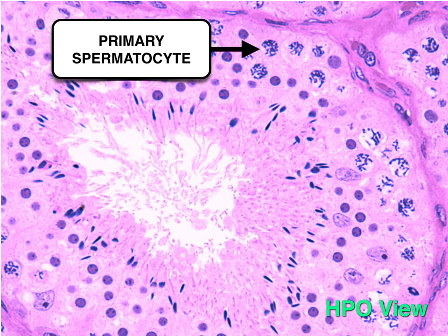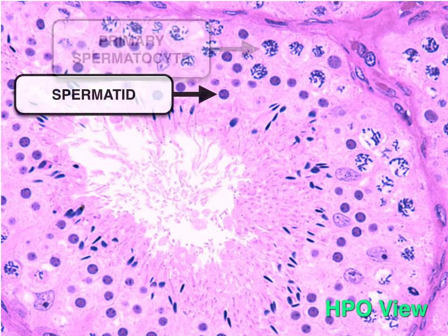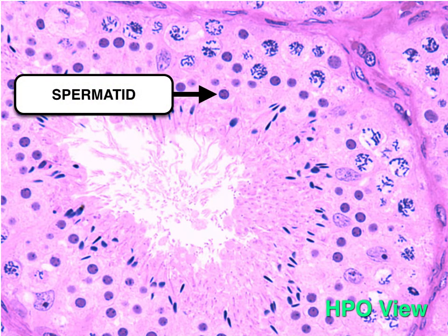Secondary spermatocytes are the product of the first meiotic division. They have 23 pairs of chromatids. Because of this short stage, they are not usually seen on the slide. Spermatids are the haploid products of meiosis — they are spherical cells.